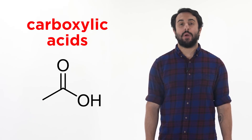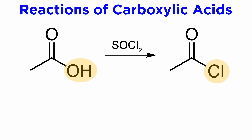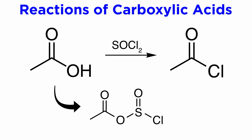The first reaction we will examine is the conversion of carboxylic acids into acid chlorides. The reagent that will achieve this is thionyl chloride, or SOCl₂. As we can see here, the OH is replaced with Cl, first via a chlorosulfite intermediate which the chloride attacks.